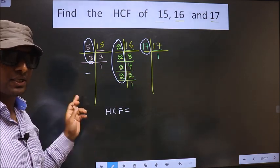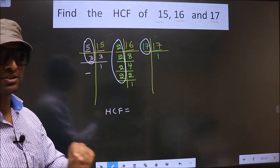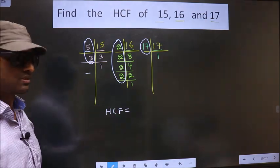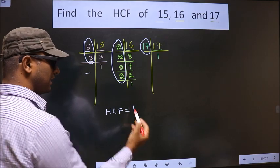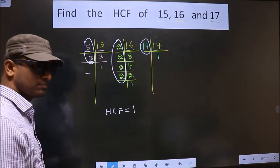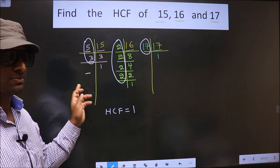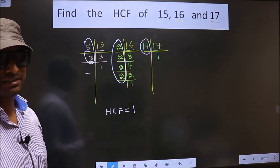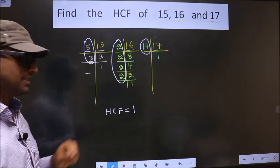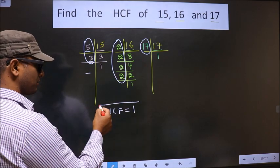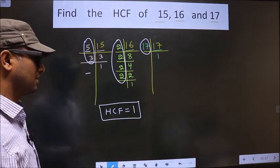Therefore we don't have any number present in all 3 places. Whenever no number is present in all the 3 places, in those situations your HCF will always be 1. Whenever no number is present in all the 3 places, in those situations HCF is 1. This is our answer.